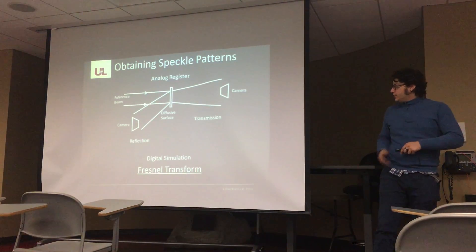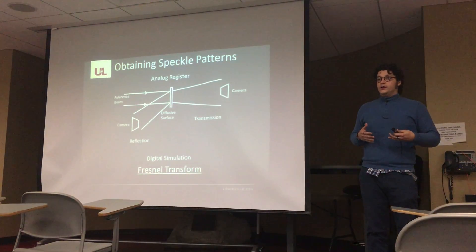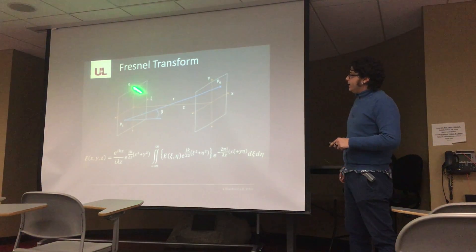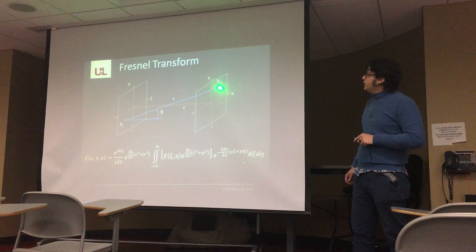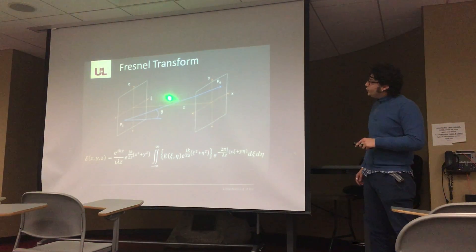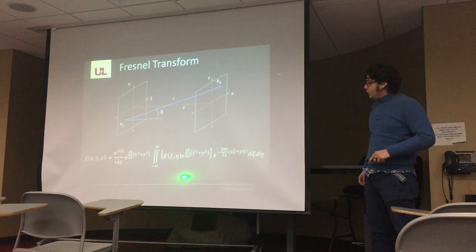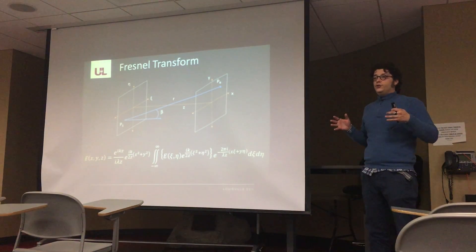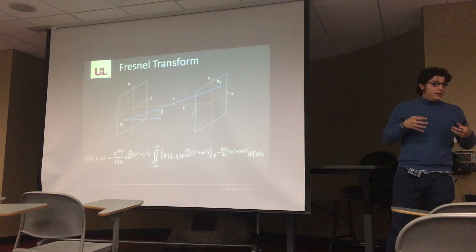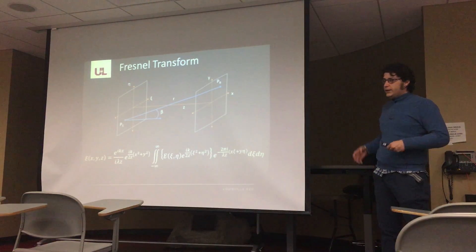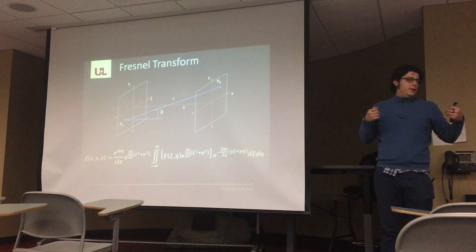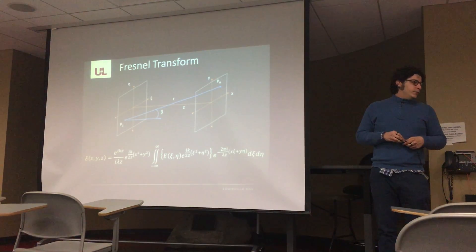If we want to work with the actual complex field of light, we use the Fresnel transform. You have an input plane and an output plane, and each point P-sub-zero from the output plane is formed by the superposition of all contributions from the input plane. What we are doing with this integral is adding all the contributions from the input plane onto the output plane, with phase terms to describe how the light travels from point A to point B.